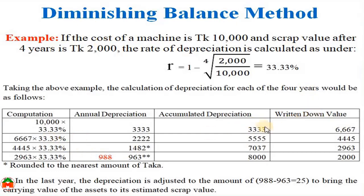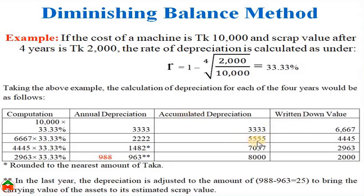In the second year, the rate of depreciation is applied on the written down value of 6,667. The annual depreciation for year two is 2,222. Adding this to the previous accumulated depreciation of 3,333 gives total accumulated depreciation of 5,555. Deducting 5,555 from the acquisition cost gives the written down value of 4,445.